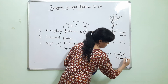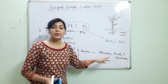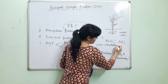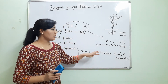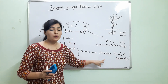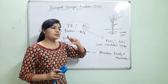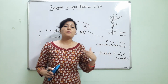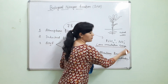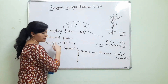Bradyrhizobium is a slow-growing bacteria. There is also an important term: cross inoculation group. It means that there are various species of Rhizobium, and no single species of Rhizobium can make nodules in all types of leguminous plants. Certain Rhizobium species require certain groups of plants to form nodules and fix nitrogen. This phenomenon is called the cross inoculation group. There are 32 cross inoculation groups.